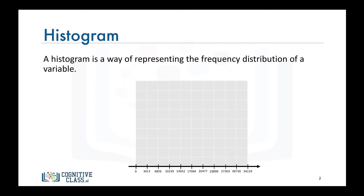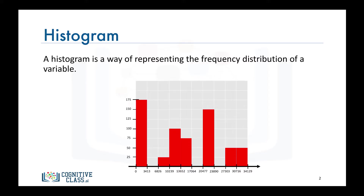Say the number of data points having a value between 0 and 3,413 is 175. Then we draw a bar of that height for this bin. We repeat the same thing for all the other bins. And if no data points fall into a bin, then that bin would have a bar of height 0.